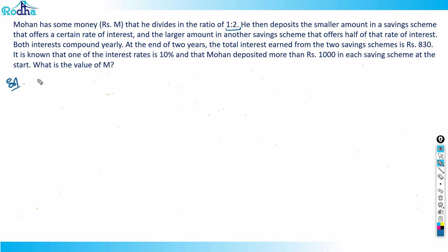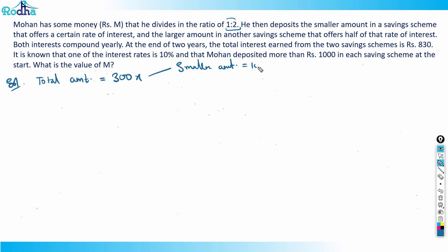I'll assume the total amount as 300x to make calculations easier, since the ratio is 1:2 and 1+2=3. So the smaller amount will be 100x and the larger amount will be 200x, in the ratio 1:2.